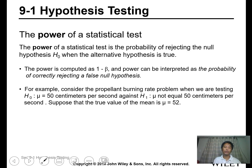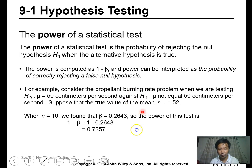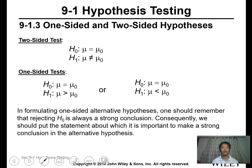There is another tool in statistical testing called the power of the test, computed as 1 minus beta. Once you calculate beta, the power is obtained by subtracting beta from 1. The power is interpreted as the probability of correctly rejecting a false null hypothesis. With beta equal to 0.2643, the power is 0.735.